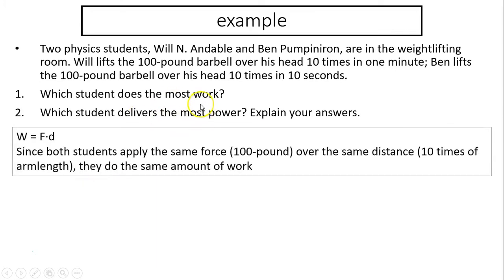First is work. Work equals force times distance. So since the force is the same, both are 100-pound barbells. How about the distance? Both lift it 10 times, so the distance has to be the same also. Therefore, they must do the same amount of work.